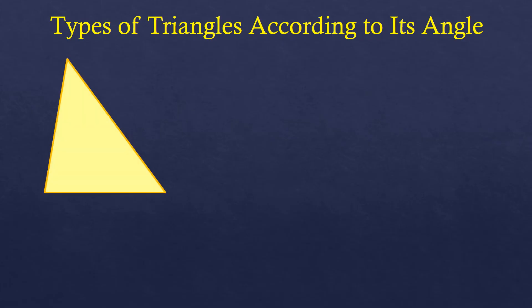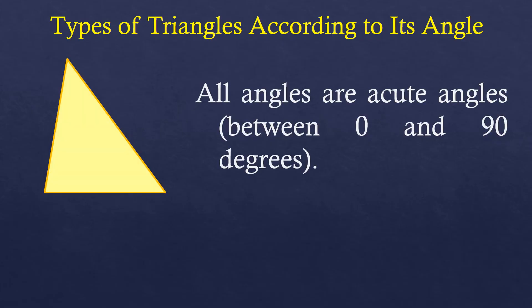Now if it's like this, where all angles are acute angles, meaning the measure is between 0 and 90 degrees, then it is an acute triangle.